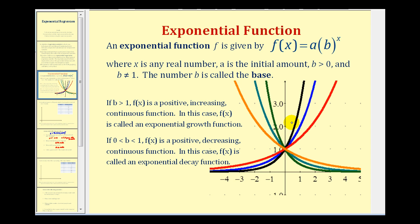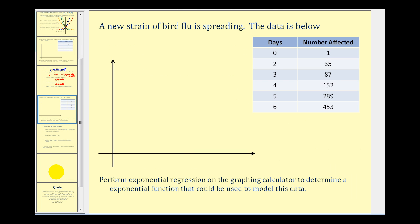Let's take a look at our second example. Here we have some data about how fast people are becoming infected by the bird flu over a period of six days. Let's create a scatter plot on the graphing calculator and see if an exponential function is appropriate to model this data.